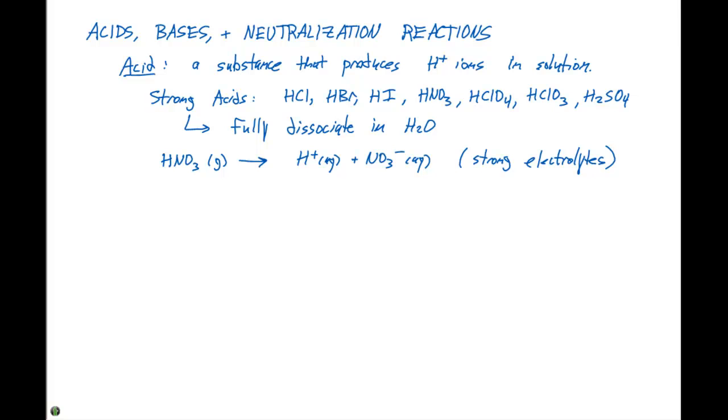So by knowing all of these seven strong acids, you're going to then know what the weak acids are, because every other acid is weak, and most of the acids that we're going to analyze are going to start with an H. Notice each of the seven strong acids, its formula begins with an H.